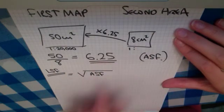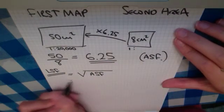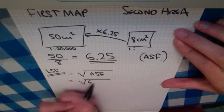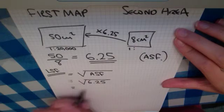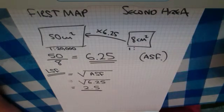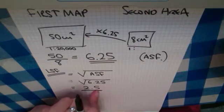So hopefully you agree that that's the square root of the area scale factor, which we found to be 6.25. So the length scale factor can be found to be square root of 6.25, which is 2.5. The length scale factor is 2.5.